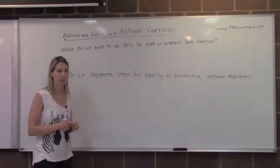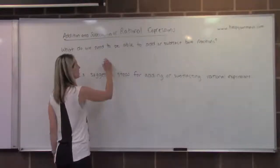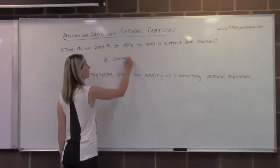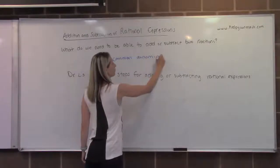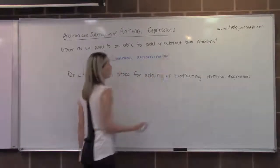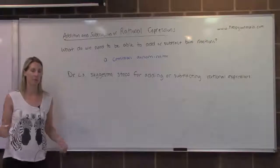We need a common denominator. That's like the big important thing about fractions when we add or subtract them is that they must have a common denominator. And rational expressions, which are a special type of fraction, also need a common denominator.